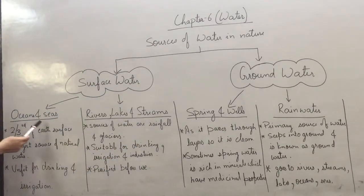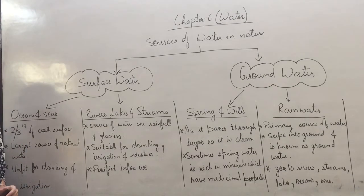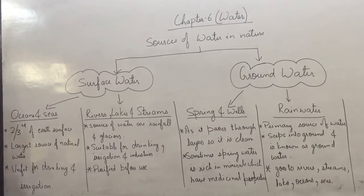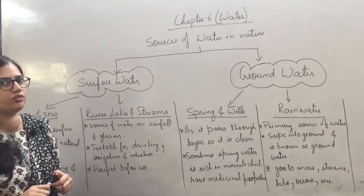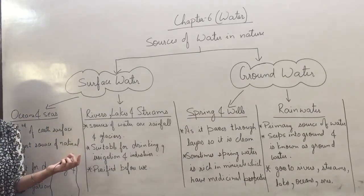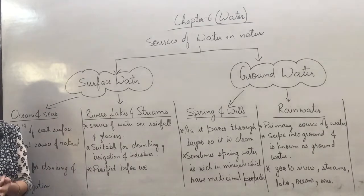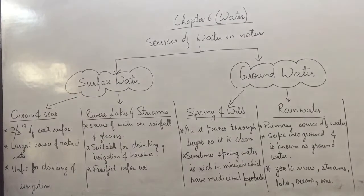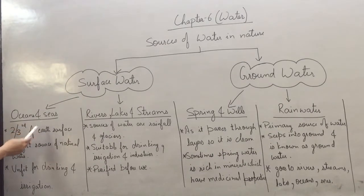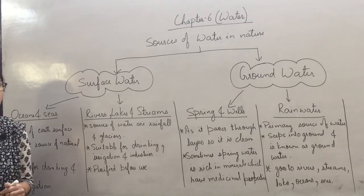If we talk about oceans and seas, two-thirds of the earth's surface is covered by oceans and seas. For example, three sides of India are covered with water — on one side we have the Indian Ocean, and on the other sides we have the Bay of Bengal and the Arabian Sea. These are the largest source of natural water.